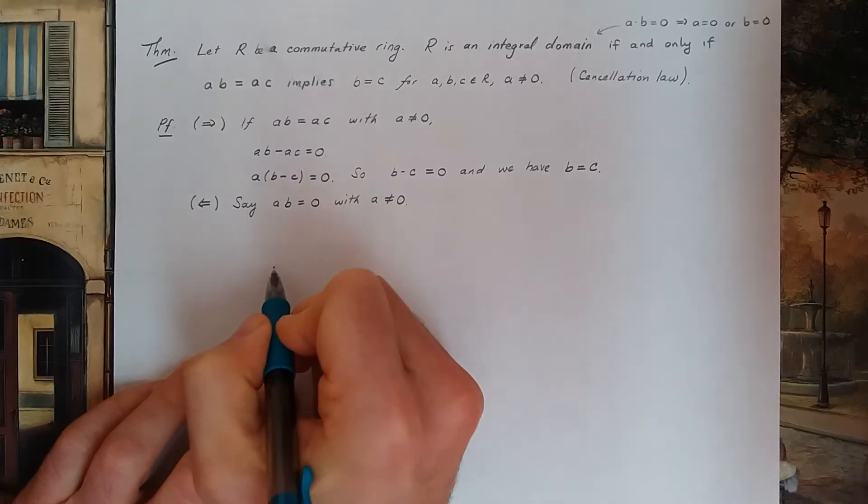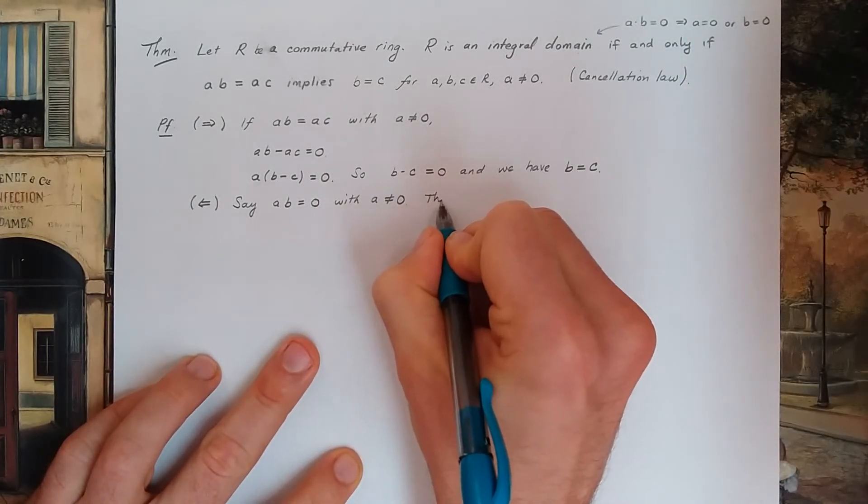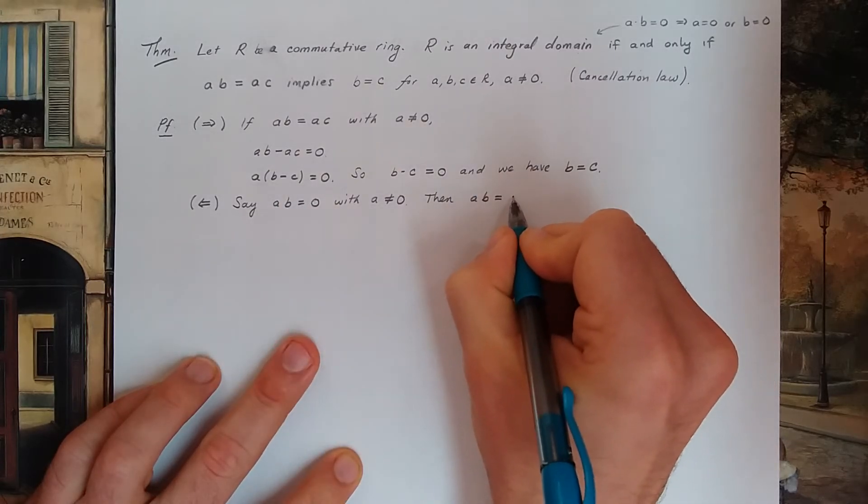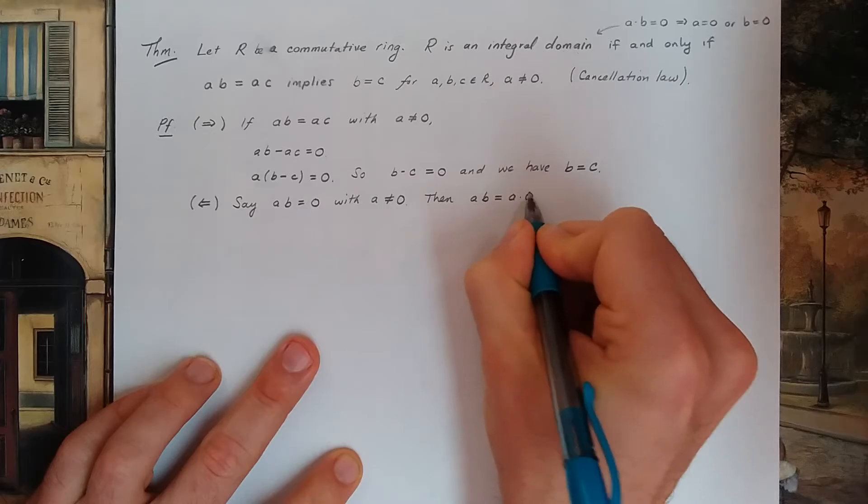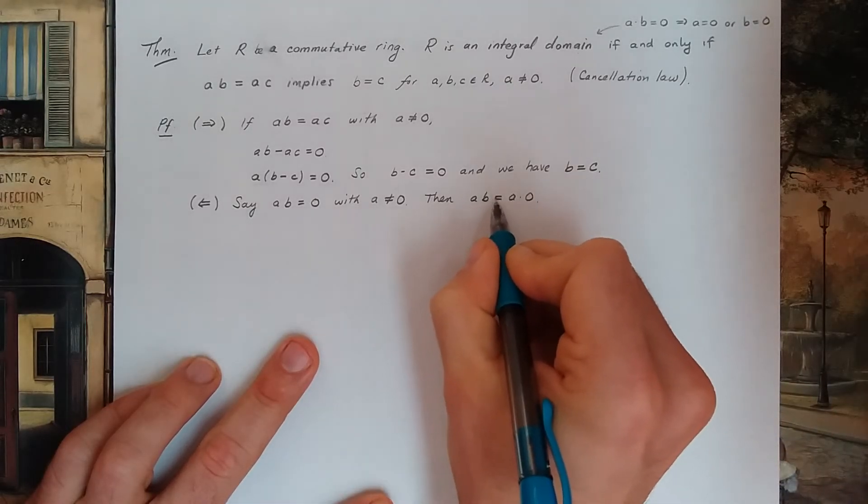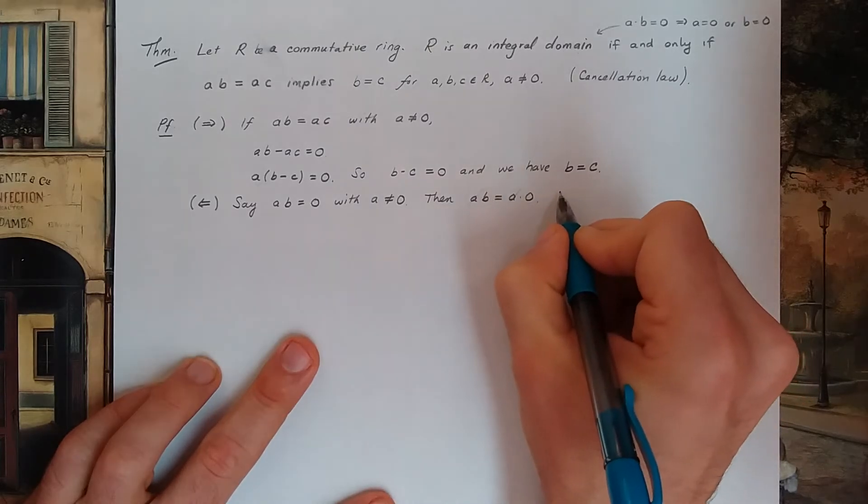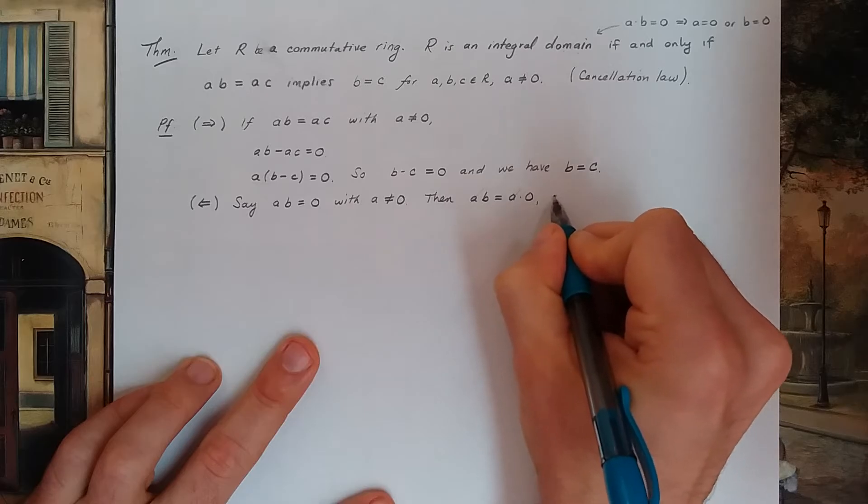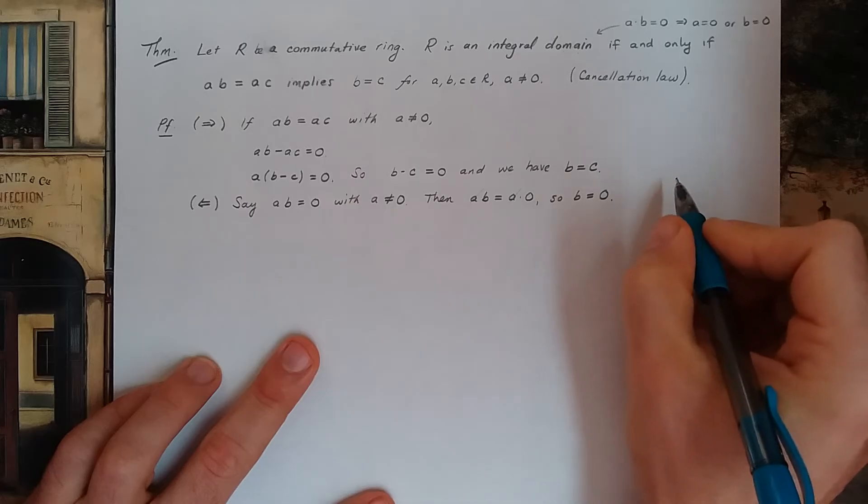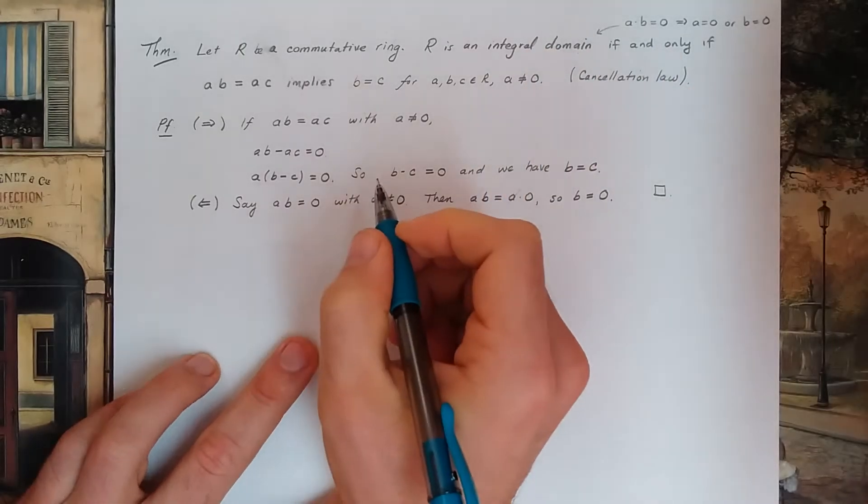Hopefully b has to be equal to zero to be an integral domain. But then what we have is ab equals zero. That's the same as a times zero. Anything times zero is zero. So now cancellation laws can kick in. I can cancel the a and I can find b equals zero. So that proves that I have an integral domain. Alright, so there's the end of that proof.